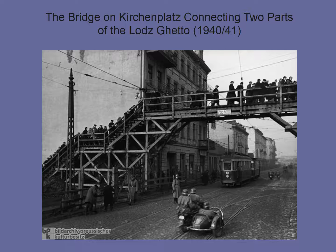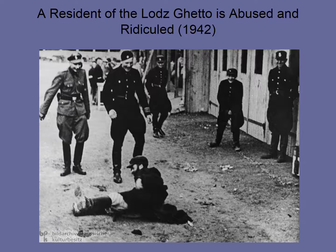To give you an idea of what ghettoization looked like, this is the Lodz Ghetto in the east, which came after the invasion of Russia in Operation Barbarossa. You see a bridge where Jewish individuals are walking over, and German individuals below — the bridge connected two parts of the ghetto, areas segmented off from the rest of the city. You also see SS officers in black uniforms ridiculing a Jewish individual in the Lodz Ghetto. When you look at the Holocaust, humiliation is often one of the ways that mass killing begins to be justified in the minds of the murderers.